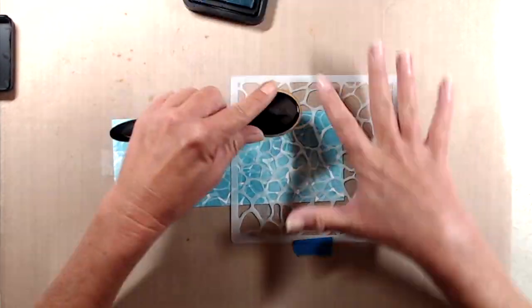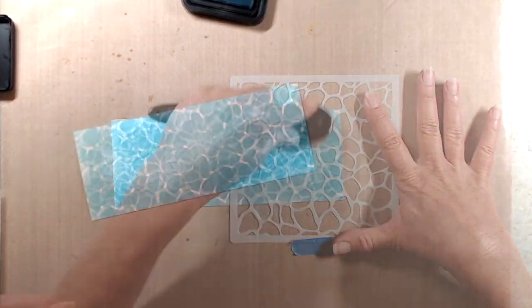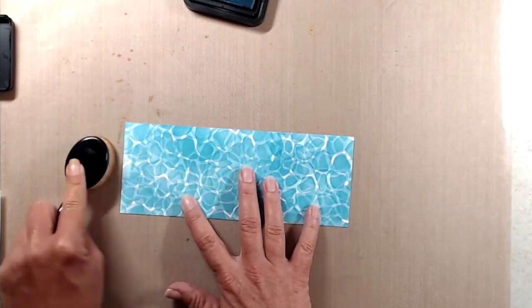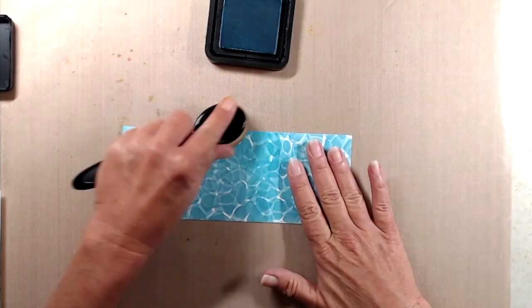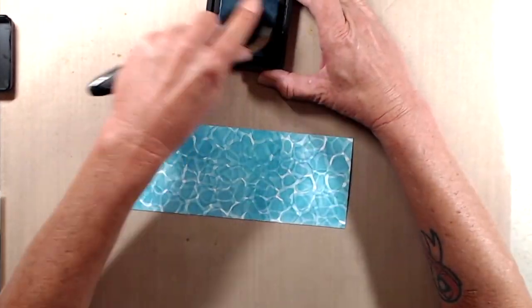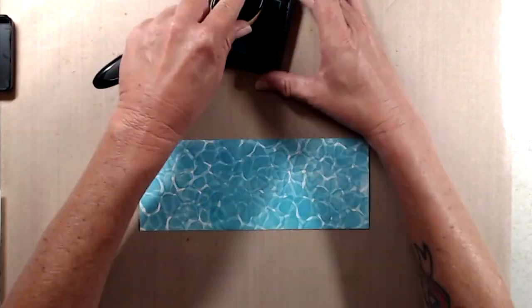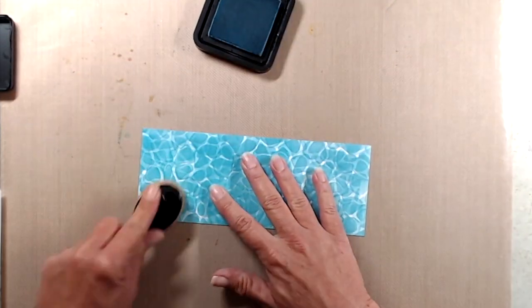Once I had all of the stenciling done and I removed the stencil, I did go over that card panel just to fill in some of the white stripes that were left behind, just so that they weren't quite so bright white.